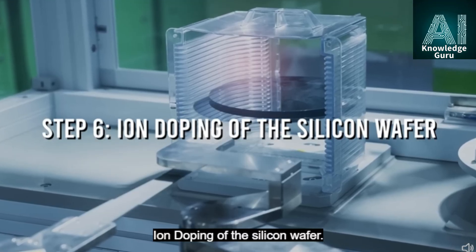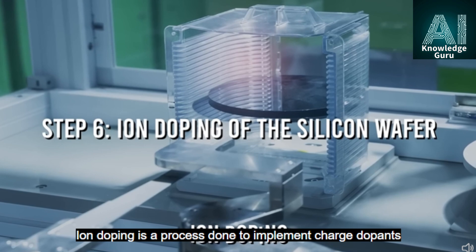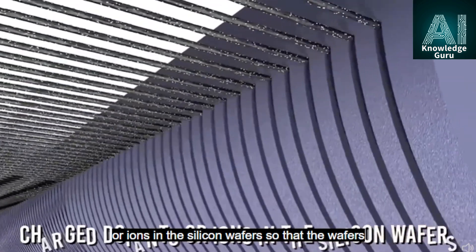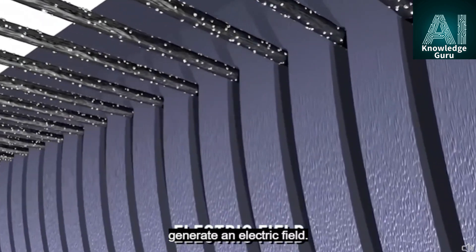Step 6: Ion doping of the silicon wafer. Ion doping is a process done to implement charged dopants or ions in the silicon wafers so that the wafers generate an electric field.